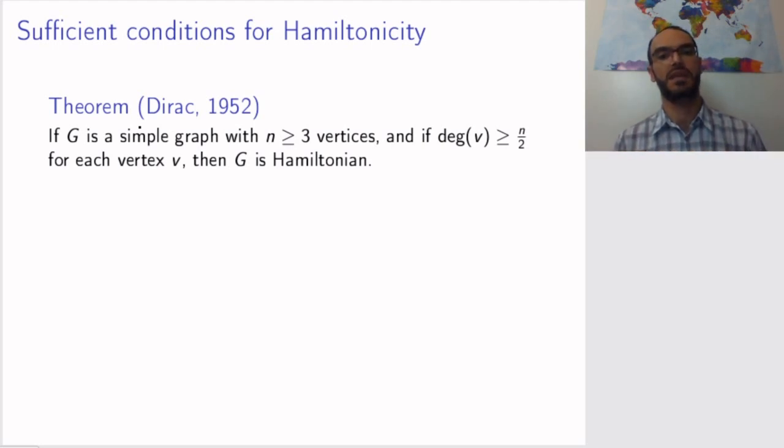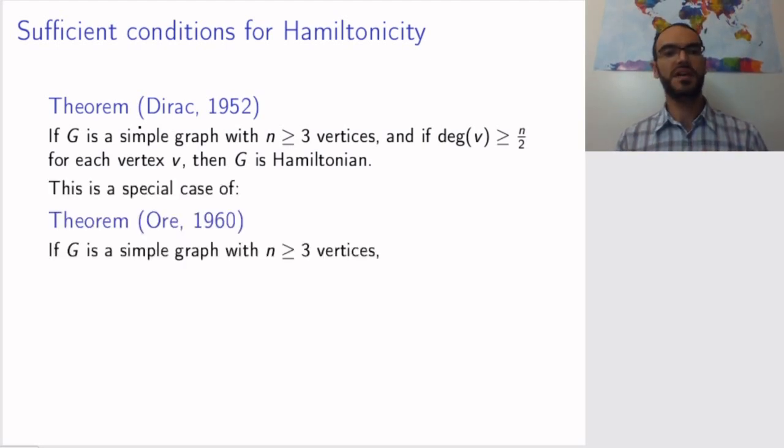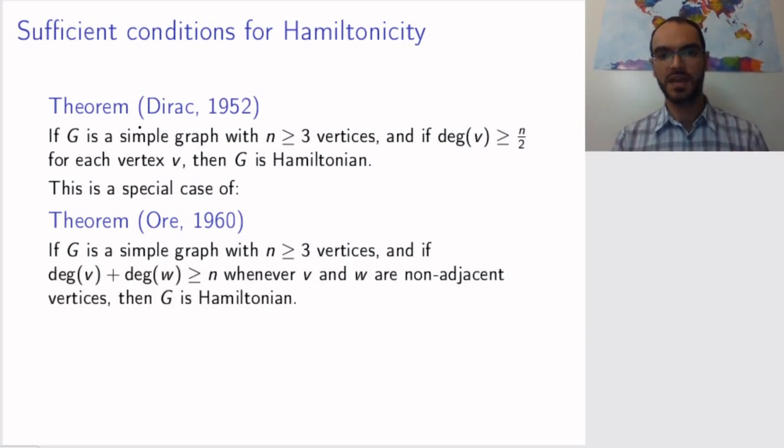This in a sense means that if you have enough edges, you will be fine. Among these many edges, you will find at least one Hamilton cycle. This theorem is in fact a special case of a theorem that came eight years later, formulated by the Norwegian mathematician Øysten Øre. Øre claimed and proved that if G is a simple graph with at least three vertices, and if the sum of the degrees of any two vertices that are not adjacent is at least n, the number of vertices, then the graph is Hamiltonian.